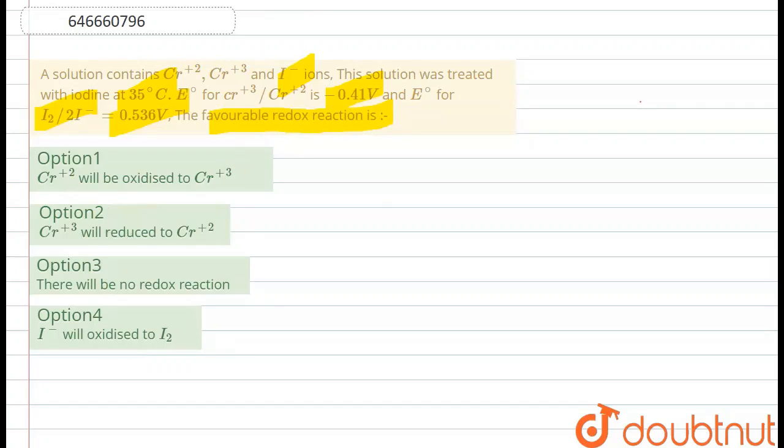We have been given chromium 3 plus to chromium 2 plus E naught value, its reduction potential is minus 0.41 volt. And I2 to 2I negative, the reduction potential is also given to us, it is equal to 0.536 volt.